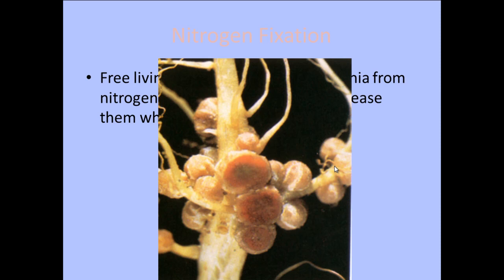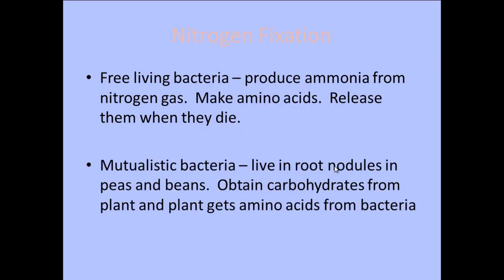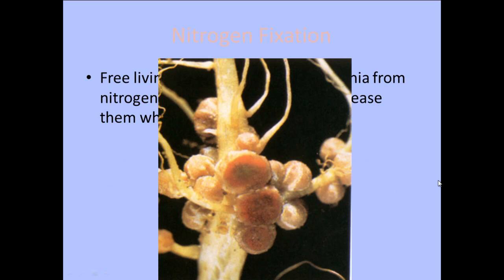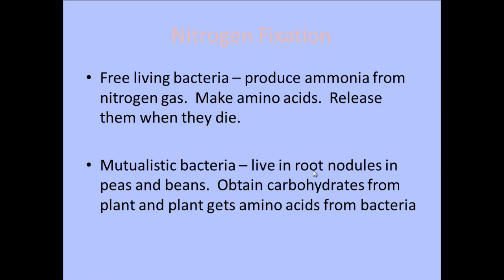A different type of nitrogen fixation uses mutualistic bacteria, which live on the root nodules of plants like peas and beans, as illustrated in this diagram. Because they are mutualistic, both the plant and the bacteria benefit. The bacteria get carbohydrates from the plant, and the plant gets amino acids from the bacteria. The bacteria fix nitrogen from the air, converting it into ammonia and then into amino acids, which the plant can then use. It is a mutual relationship — they both get something.